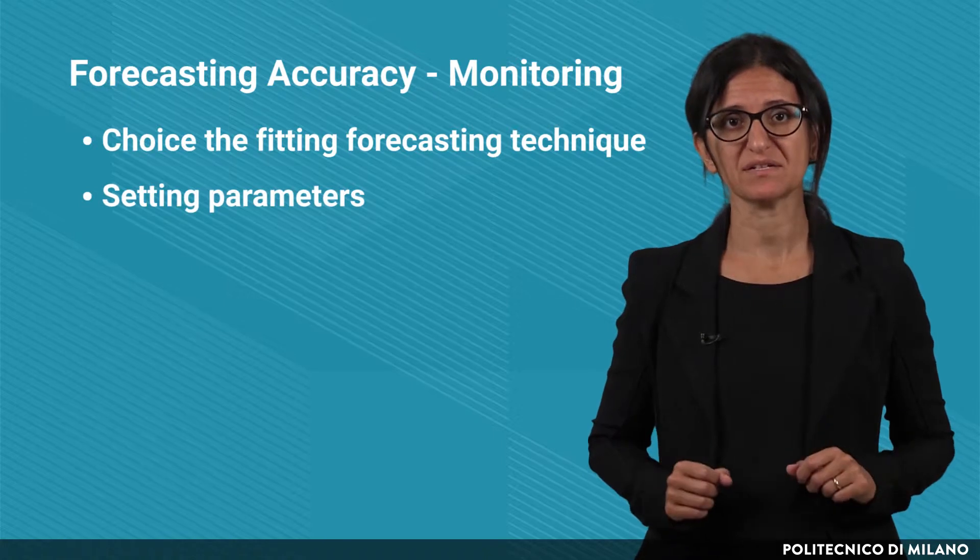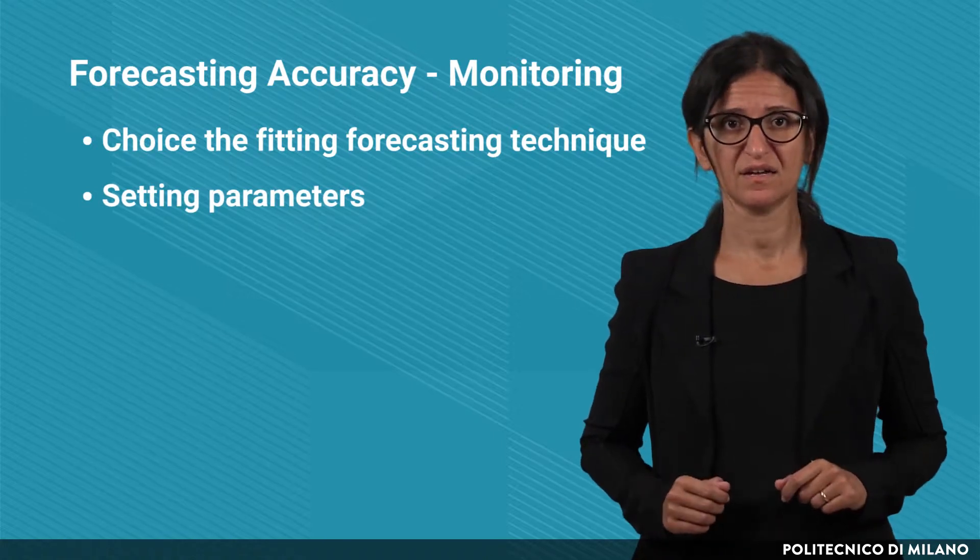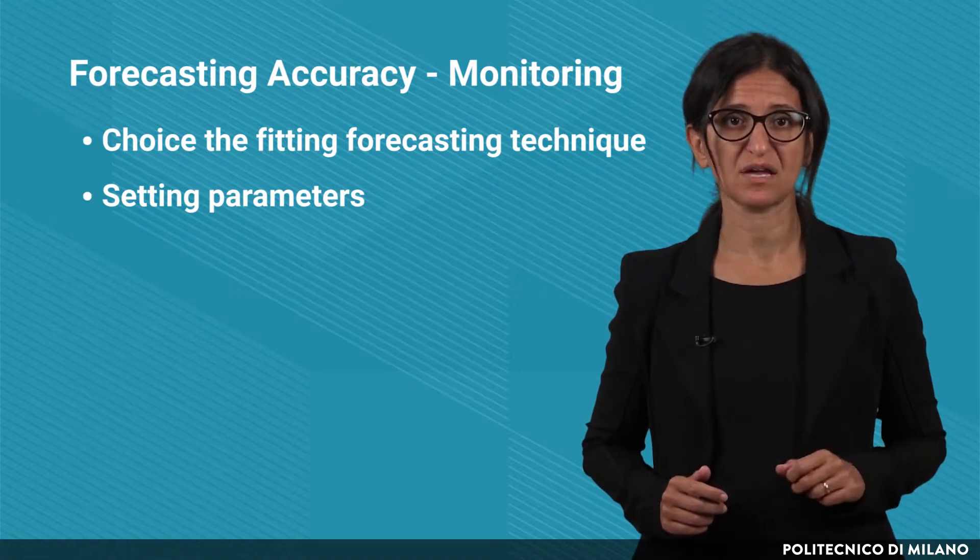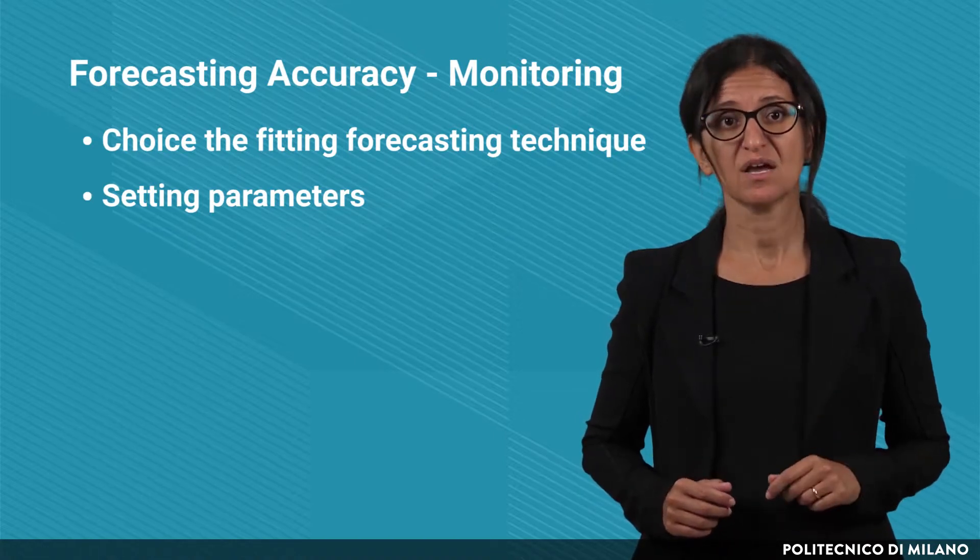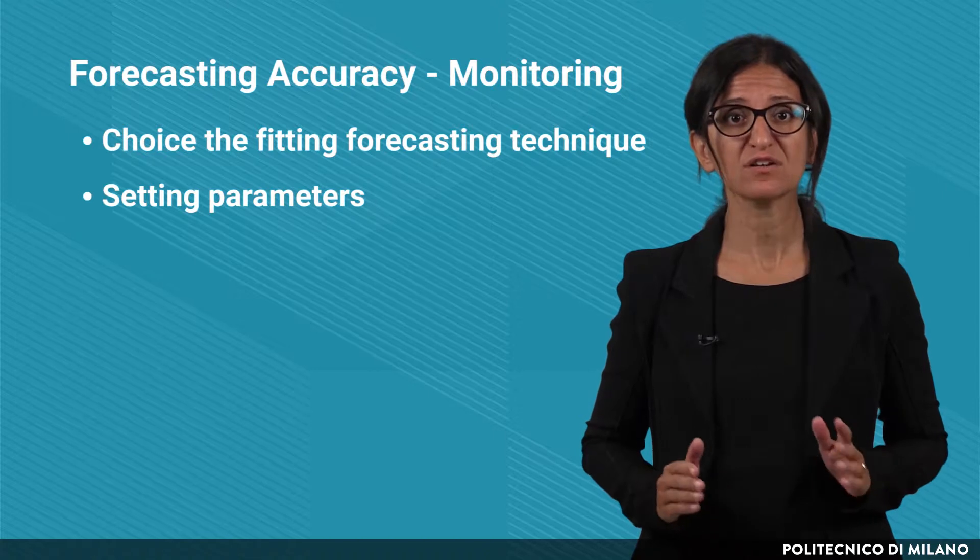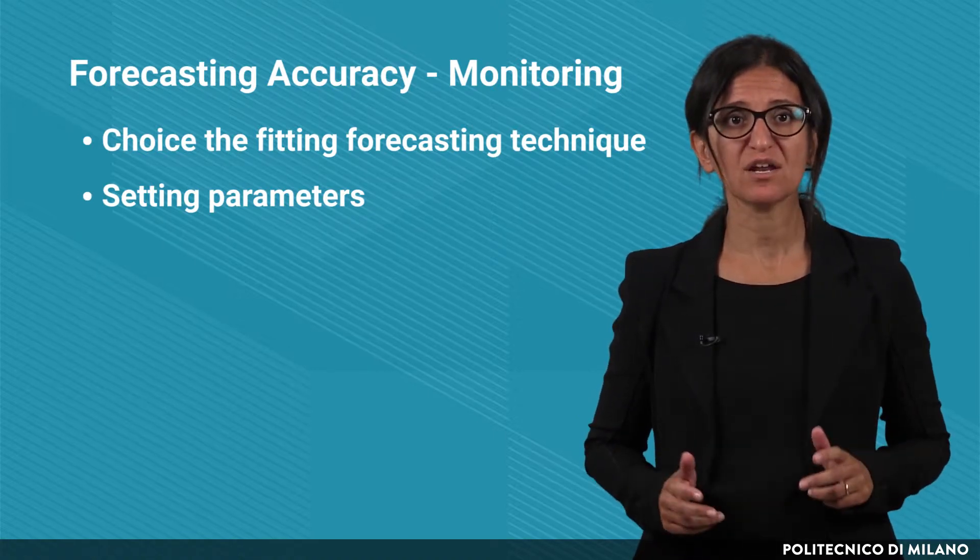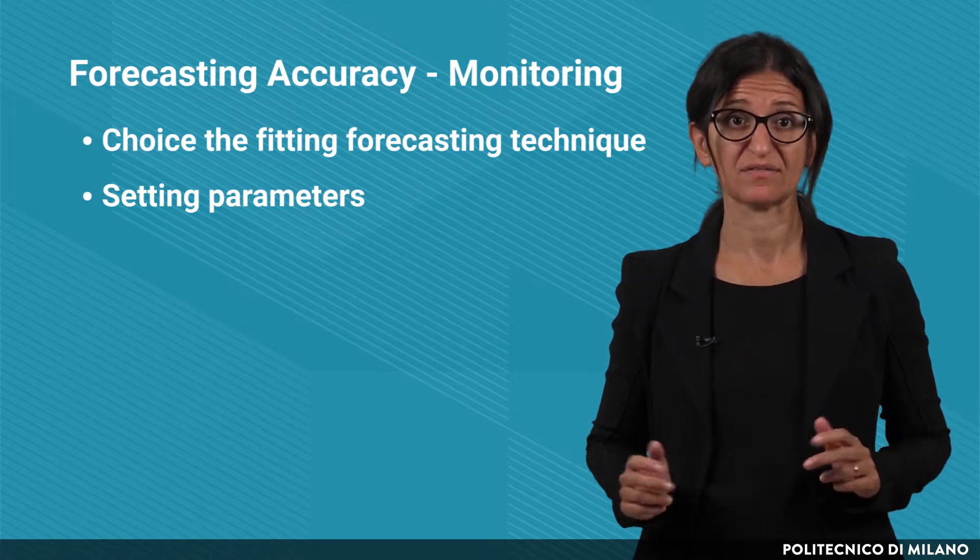Then, to set the parameters of the selected technique. For example, when we have analyzed the implementation process of the Holt-Winters method, we have seen that the smoothing coefficients alpha, beta and gamma should be chosen in order to minimize the forecast errors.